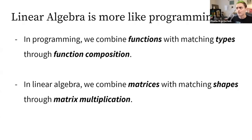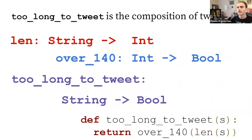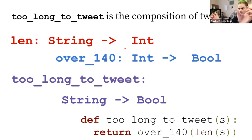This approach uses ideas from programming and computer science rather than physics or abstract math. In programming, we combine functions with matching types through function composition. In linear algebra, we combine matrices that have matching shapes through matrix multiplication. For example, a function 'too_long_to_tweet' can be defined by composing 'len' — which takes a string and returns an integer — and 'over_140' — which takes an integer and returns a boolean.